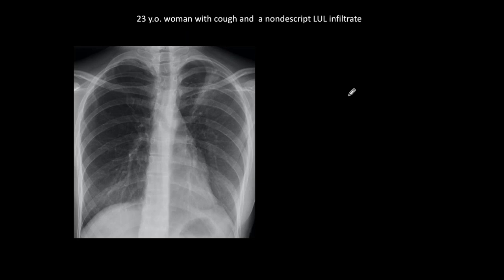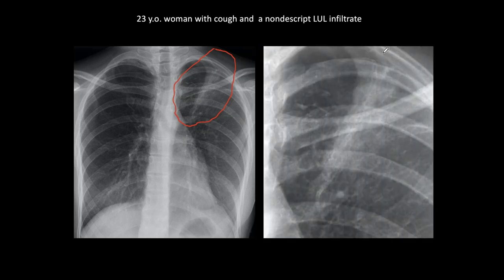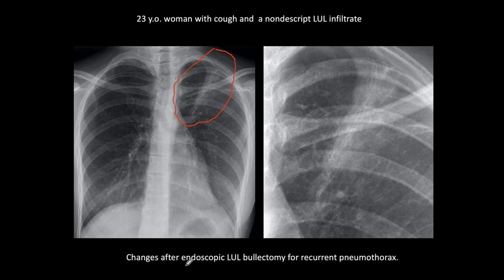Another patient: a 23-year-old woman with cough and a non-discreet left upper lobe infiltrate. There is a triangular infiltrate. Your first impression may be tuberculosis, which always comes to mind with a left upper lobe infiltrate. But in the coned-down view, in the center of the triangular infiltrate there is a longitudinal ring chain of a surgical staple. So we know this patient has been operated on, and these are changes after an endoscopic left upper lobe bullectomy for recurrent pneumothorax. We can identify that as a non-significant finding secondary to surgery, and skip any further examination.